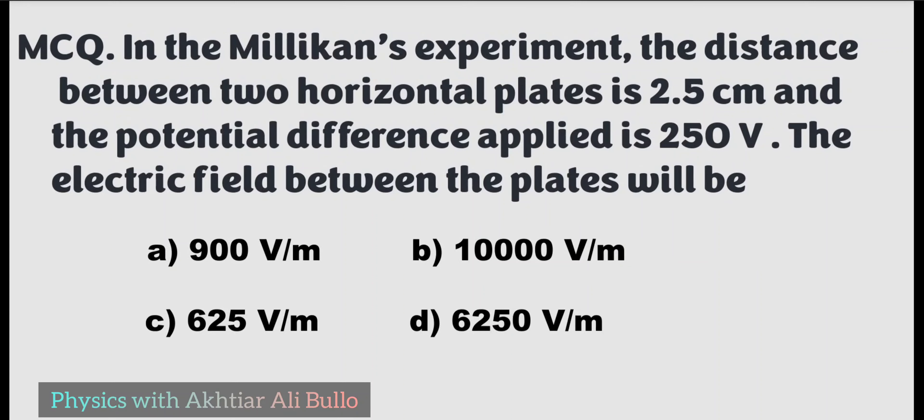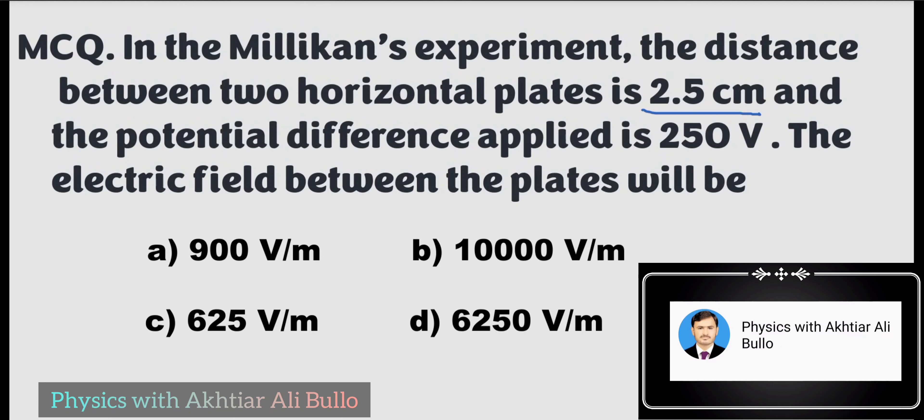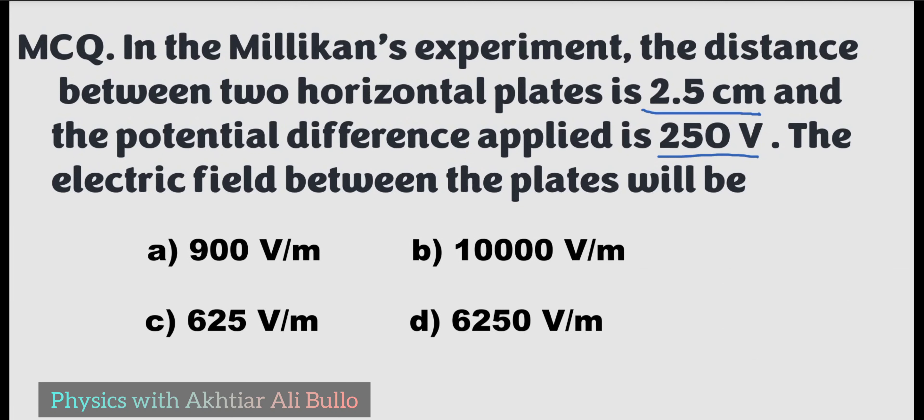In Millikan's experiment, the distance between two horizontal plates is 2.5 centimeters and the potential difference applied is 250 volts. The electric field between the plates will be: a) 900 V/m, b) 10,000 V/m, c) 625 V/m, d) 6,250 V/m. To calculate the electric field between the plates: